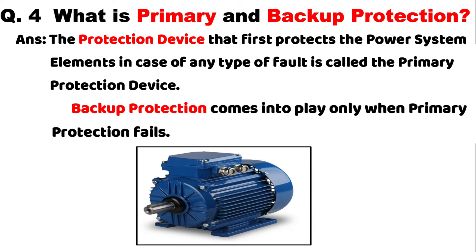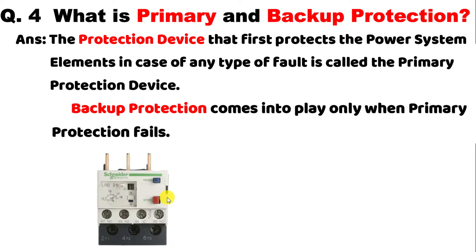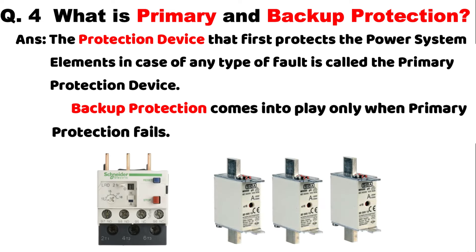To understand this clearly: for a motor, we use a starter connected with the motor. In this starter, an overload relay is used for protection of the motor — this is the primary protection. Also in the starter there is a fuse, which is the backup protection. If by chance the overload relay does not work, then the fuse will provide the protection.